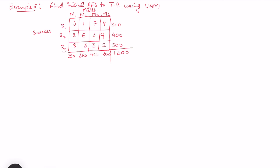In this video I'll be taking more examples to find the initial BFS using Vogel's Approximation Method (VAM). This video is in continuation with my previous video on Vogel's approximation method, so kindly go through that video to understand what VAM is. Here we have a transportation problem with three sources and four destinations, and it is a balanced transportation problem — the summation of supply equals the sum of demand.